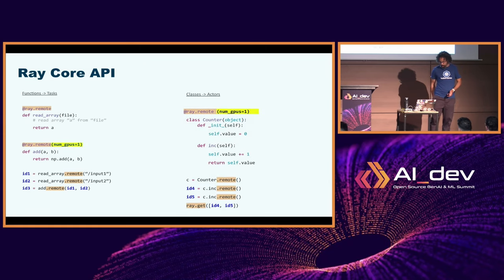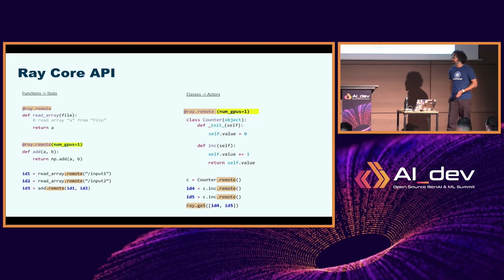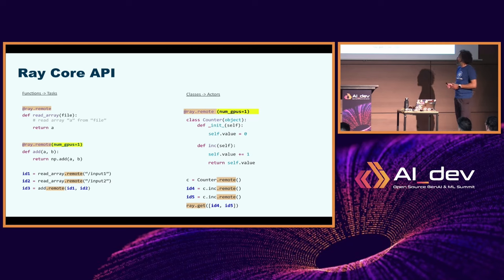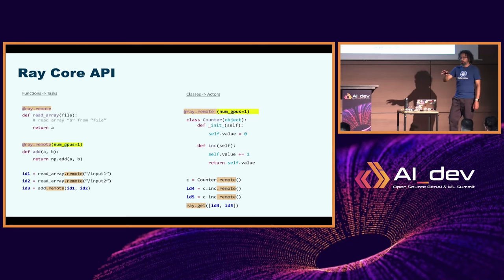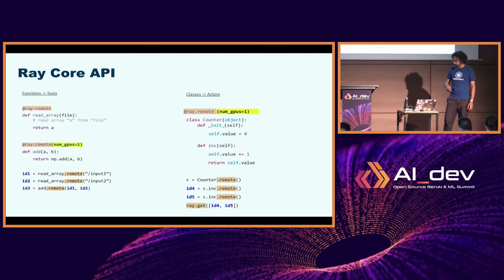If you have Python classes and you annotate them, they are called actors - it's just terminology Ray uses. So if you go look at the dashboards, an actor is basically just a Python class, and a task is just a Python function. You can also add inputs to the @ray.remote annotation - for example, specifying that you want to run a function with one GPU. This will prompt the framework to schedule that workload on top of a node that has a GPU available.